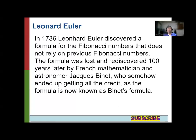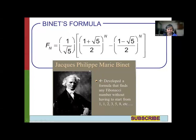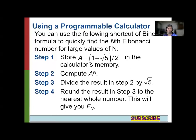Today, we call this the Binet formula — named after Jacques Philippe Marie Binet. This is the formula for finding any Fibonacci number. If you want to find F sub 100, simply substitute N with 100 and do the computation. Of course, it will be difficult doing it manually, so we need to use a programmable or scientific calculator.